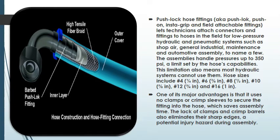Now I want to give you some information about our today's theme. Push lock hose fittings let technicians attach connectors and fittings to hoses in the field for low-pressure hydraulic and pneumatic systems such as shop area, general industrial maintenance, and automotive assembly, to name a few. The assemblies handle pressure up to 350 psi, a limit set by the hose's capabilities.